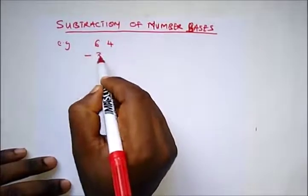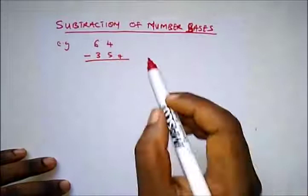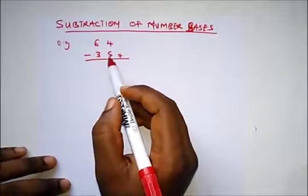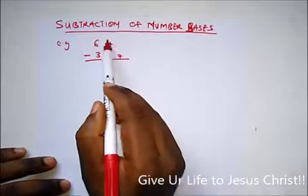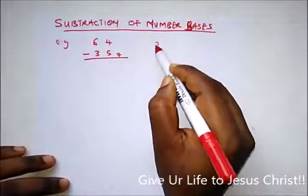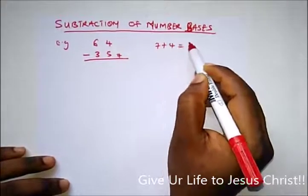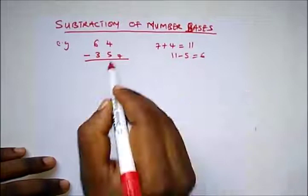Minus 35 base 7. This is in base 7. How do we do this? You can't subtract 5 from 4, so we borrow a 1, and this one you're borrowing is a 7. So we have 7 plus 4, which will give us 11, and 11 minus 5 is 6.